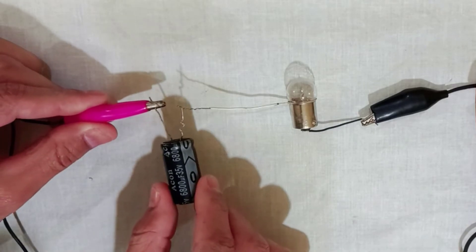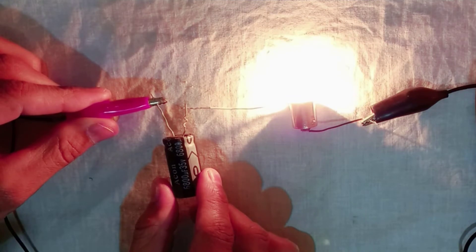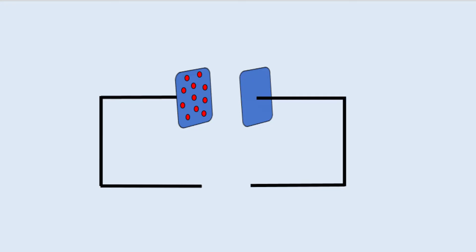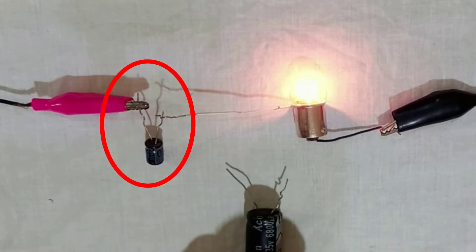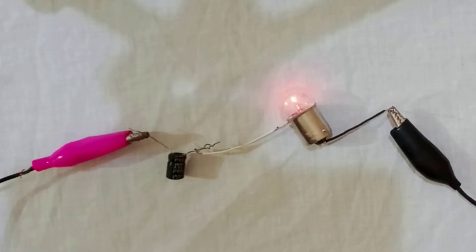Similarly, a capacitor of low capacitance is made up of smaller plates which cannot accommodate more charge per volt. Therefore, it will offer more opposition and will have more reactance to AC current.